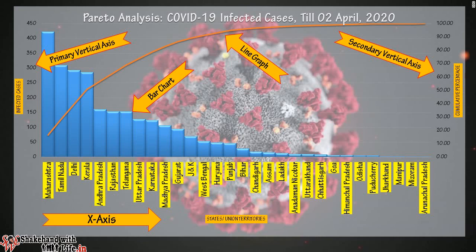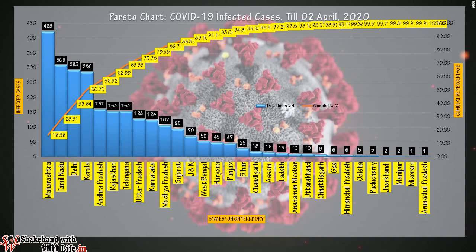taking the name of the states and union territories on the X-axis, the number of infected cases on the primary vertical axis, and the cumulative percentage of the infected cases on the secondary vertical axis — here we can see the cumulative percentage of the infected cases with respect to states or union territories by the line graph in ascending order, and the actual number of infected cases in descending order by the bar chart.